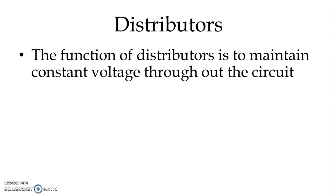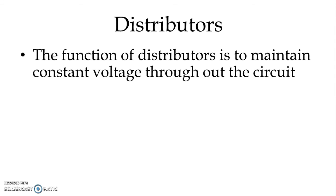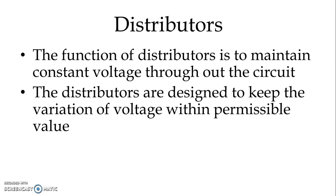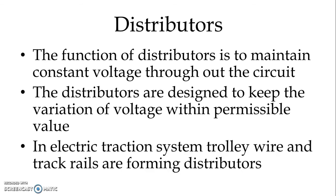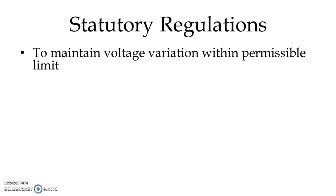Now, distributors. The function of distributors is to maintain constant voltage throughout the circuit. The distributors are designed to keep the variation of voltage within permissible values. In the electric traction system, the trolley wire and track rails form the distributors. The trolley wire is used to maintain voltage variation within the permissible limit.